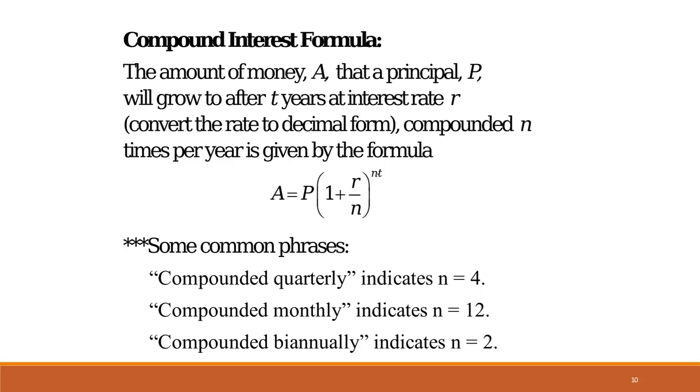And then compounded periods have different words like quarterly means 4 times a year, monthly 12 times a year, biannually twice a year, and so on. So let's look at a couple of examples.